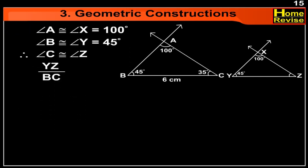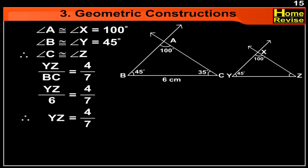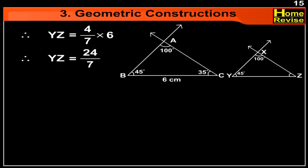Now, YZ upon BC is equal to 4 upon 7. Putting the value of BC, we get YZ upon 6 is equal to 4 upon 7. Therefore, YZ is equal to 4 upon 7 into 6, which equals 24 upon 7, approximately 3.4 cm.